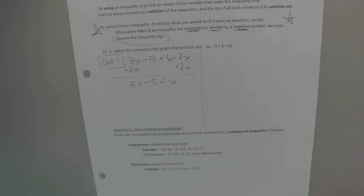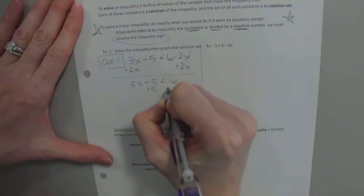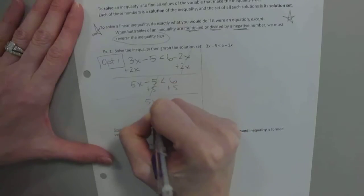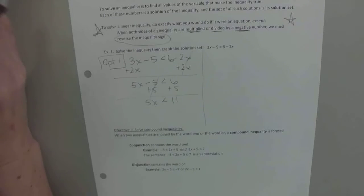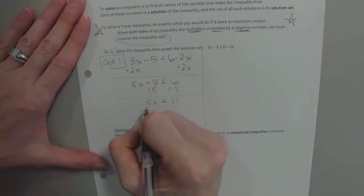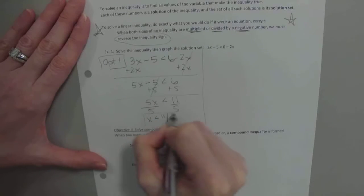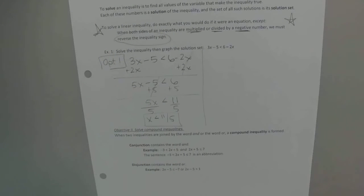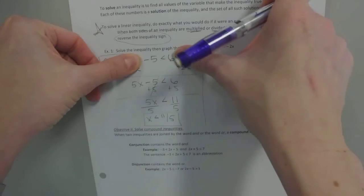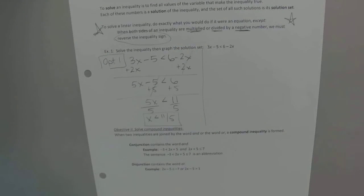Then what we'll do next is we'll just add 5 over, just like an equation. So we'll have 5x is less than 11. And here's the final part where you have to divide or multiply. You just ask yourself, are you dividing or multiplying by a negative? No. So leave the sign as is. We're just going to divide both sides by 5. So x is less than 11 fifths. That's a little over 2, about 2.2. So as long as our x values are less than 2.2, that will make the left side less than the right side. If you plug in 0, negative 5 is less than 6. But if you pick a number greater than 11 fifths, you'll see that that inequality is not true.